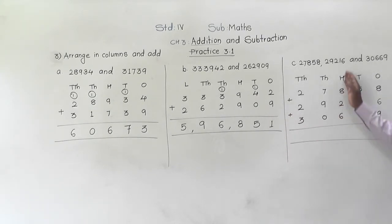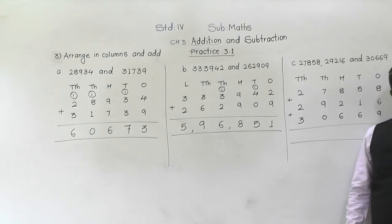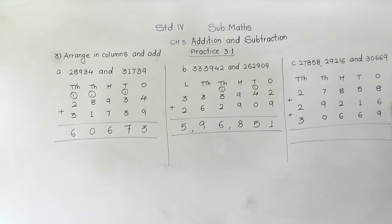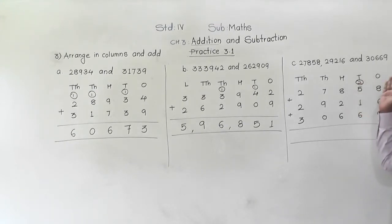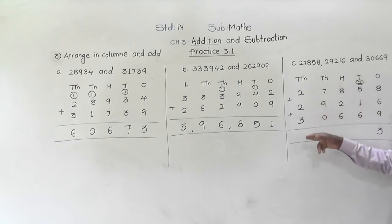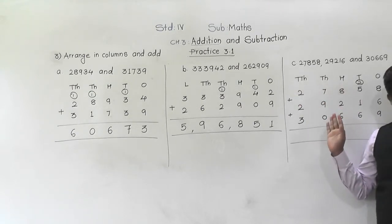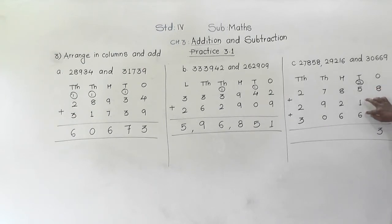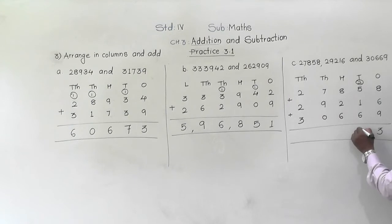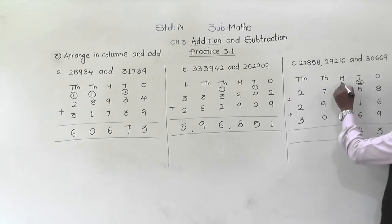Let us add: 8 plus 6 is 14, and 14 plus 9 is 23 — 3 will come down, 2 will be carried. You have to do this by counting on fingers if there are 3 numbers. 5 plus 1 is 6, 6 and 6 is 12, and 12 plus 2 is 14 — 4 will come down, 1 will be carried.